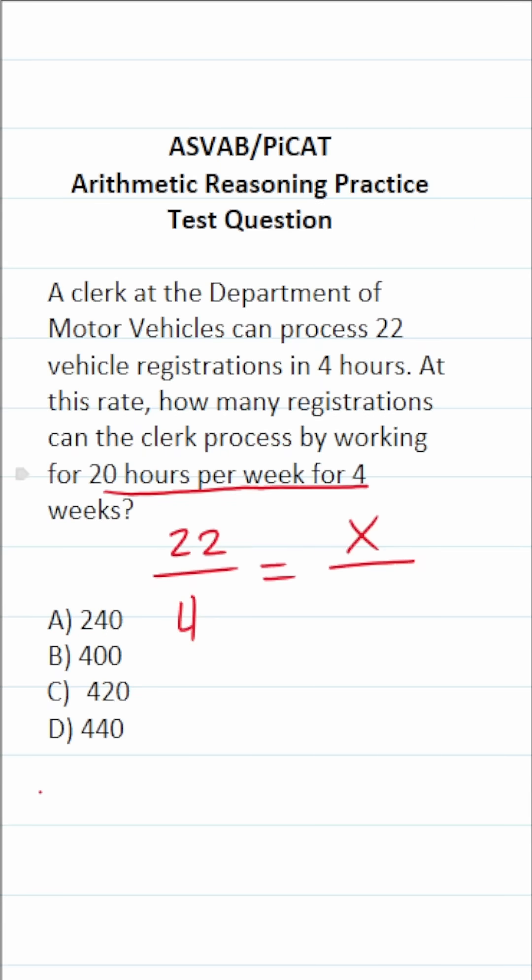So we have to determine how many hours they work in those four weeks. So that's going to be 20 hours a week times four weeks. 20 times four is 80. So this is 80.